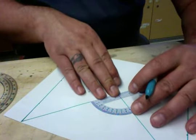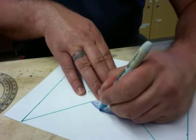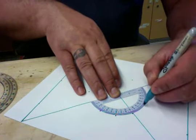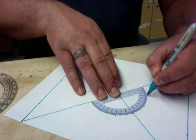So now I mark 30, 60, 90 has already been marked for us, 120 and 150.